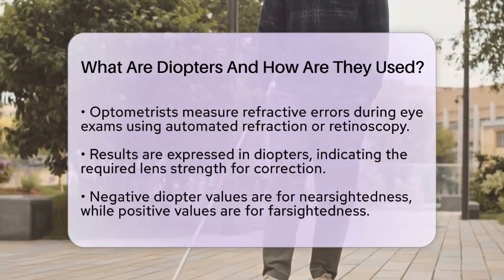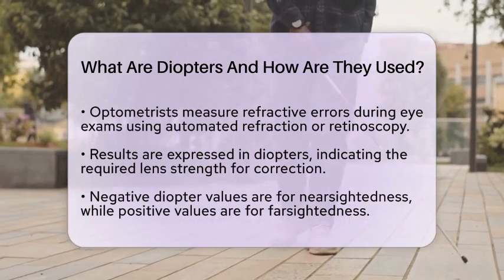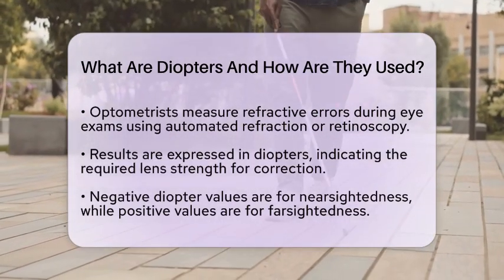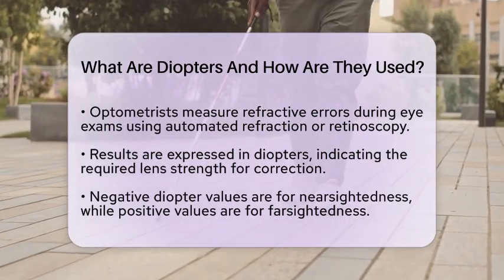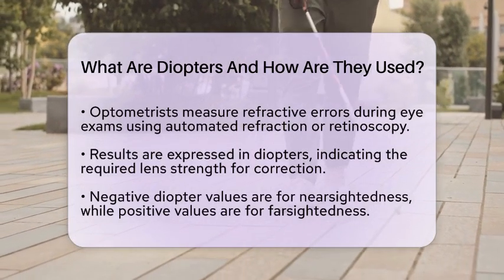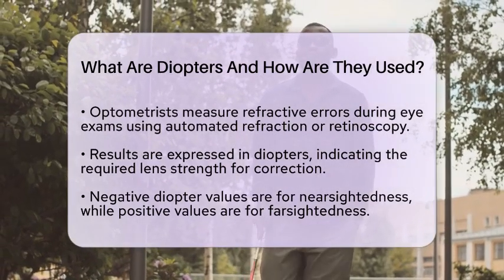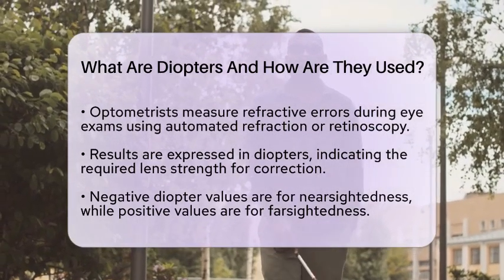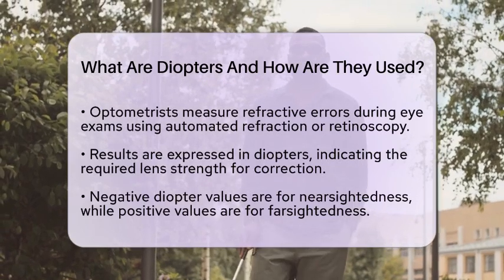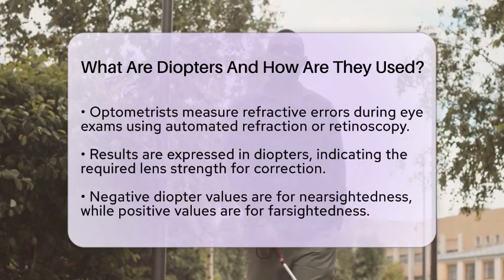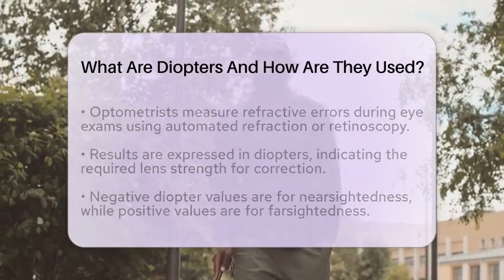Conversely, a positive diopter value is used for farsightedness, converging light rays to focus them correctly. For astigmatism, optometrists prescribe cylindrical lenses with specific diopter values along different axes. This is to correct the uneven curvature of the cornea or lens, allowing for clearer vision.